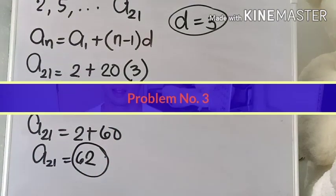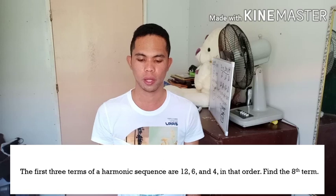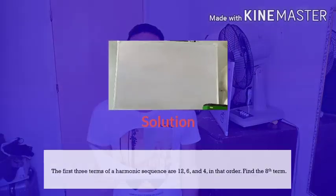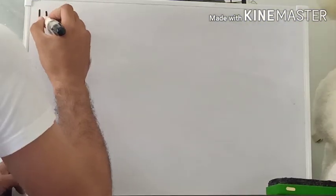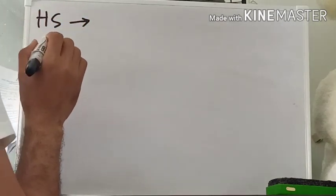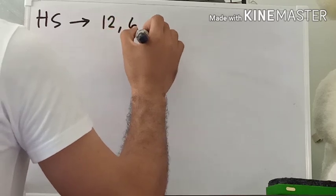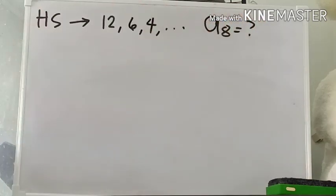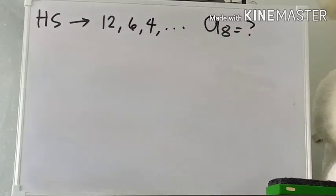For our third problem: the first 3 terms of a harmonic sequence are 12, 6, and 4, in that order. Find the 8th term. By definition, a harmonic sequence is a sequence whose reciprocals form an arithmetic sequence. So to find a specified term of a harmonic sequence, we first rewrite the corresponding arithmetic sequence.